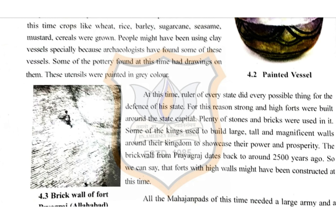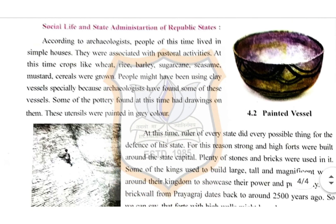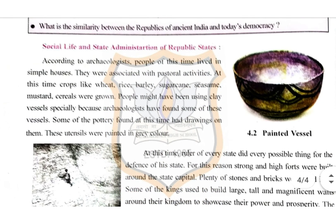Some of the pottery found at this time had drawings on them. These utensils were painted in grey colour. Children, you can see the painted vessel in figure 4.2.